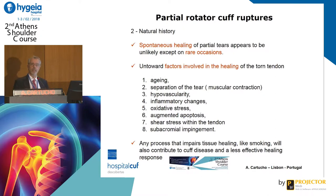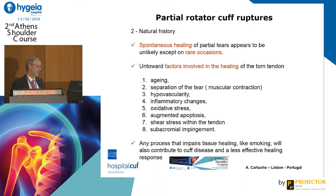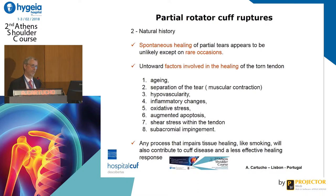One of the things we must consider is the natural history. If we thought that a small and tiny lesion would heal, perhaps we'd leave it. But the natural history says that spontaneous healing is extremely rare, not impossible, but extremely rare. The factors contributing to this are aging, muscular contraction pulling the tendon, hypovascularity in that environment, and inflammatory changes together with oxidative stress. This leads to augmented apoptosis and progressive degradation of the quality of the tendon.